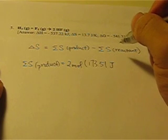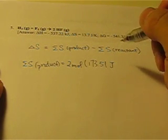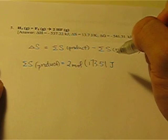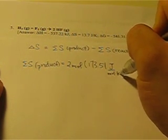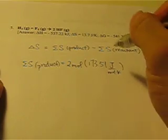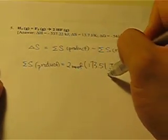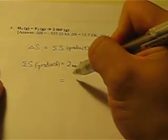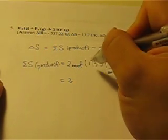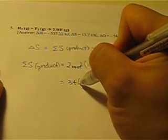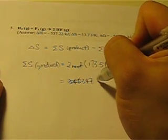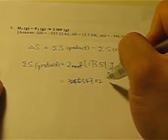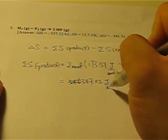Now in this case, the unit is a little bit different because there are two different measurements. Here we have joules over mole times K as the unit. And here we are canceling out the mole, so we have 347.02 joules per Kelvin.